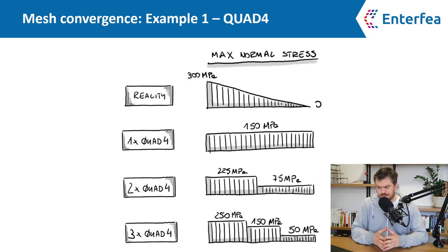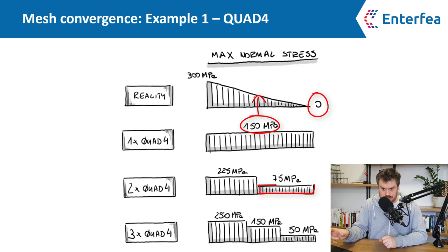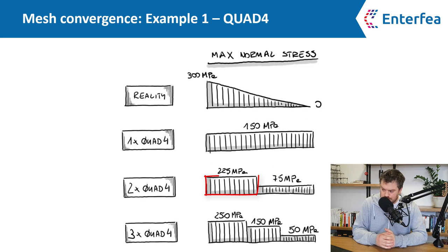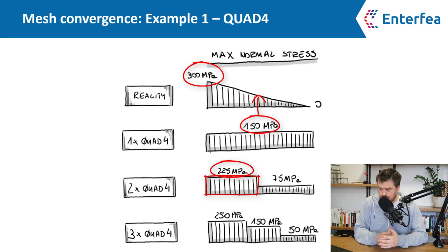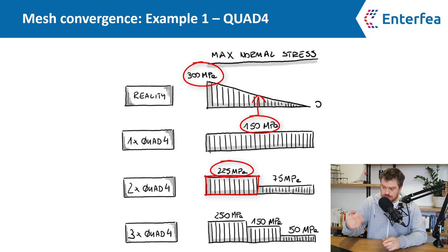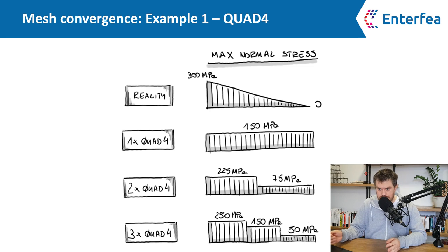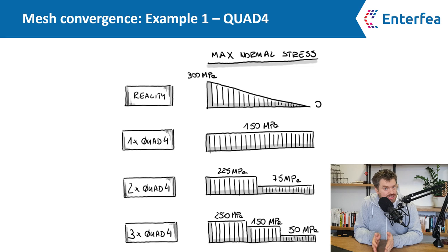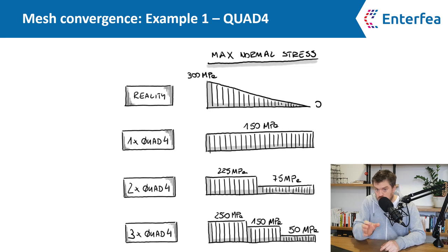If we use two quad four elements, in the middle we have 150 and on the right we have zero, so the average in the right element is 150 plus zero divided by two — that's 75 megapascals. On the left element we have 300 on the left and 150 in the middle, so the average is 225 megapascals. And that matches the FEA outcome. With three quad four elements it works exactly the same. This is why the more elements you use, the more accurate the outcome: the stress values over the small area of each element don't change much, so averaging an almost constant value gives almost that exact value.